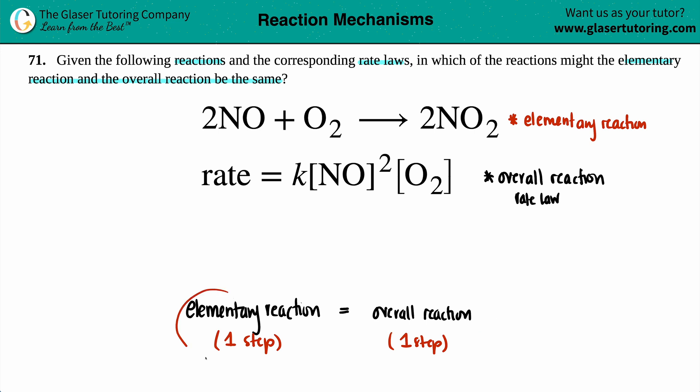But if you're saying that we just have one single step, that overall reaction has got to be coming from the one single step. And just know that we can always find out rate laws from elementary reactions because they follow the same rules as the general rate law with a catch.